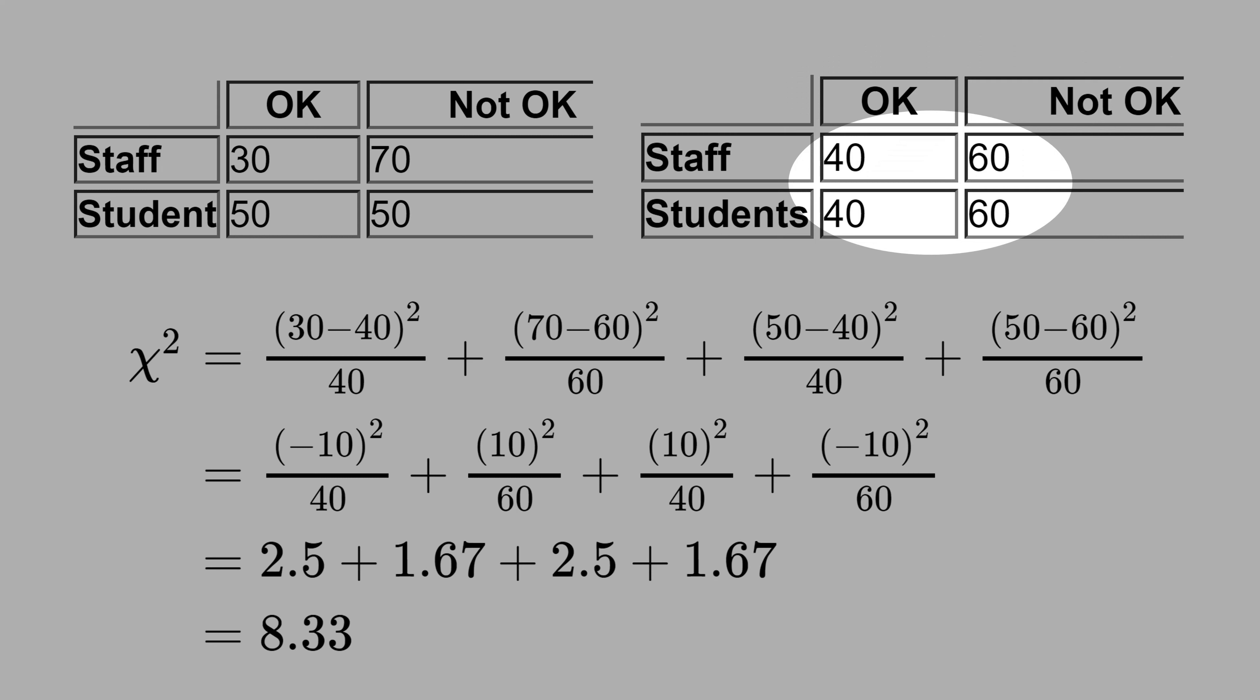But how do I get these ideal expected numbers? If you sum up 30 and 50, we get 80. That divided by 2 is 40. We do the same here. 70 plus 50 is 120. That divided by 2 is 60.